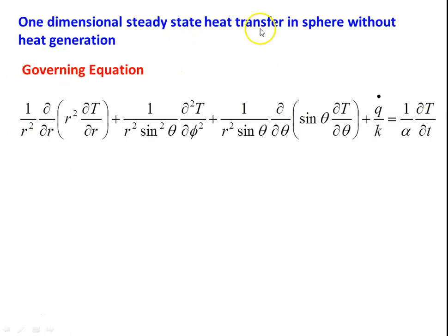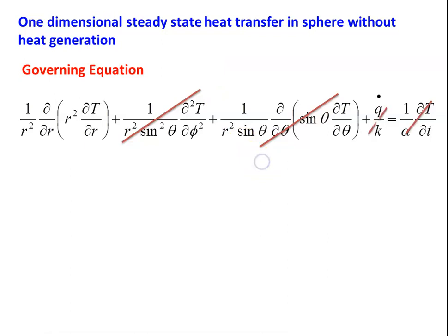Here it is one-dimensional steady state. We consider heat transfer only in the radial direction, so the heat transfer terms in the other two directions — ∂T/∂φ and ∂T/∂θ — are dropped. It is steady state, so ∂T/∂t equals zero. There is no heat generation so q̇ = 0. The governing equation for the present situation becomes: (1/r²)(∂/∂r)(r² ∂T/∂r) = 0.